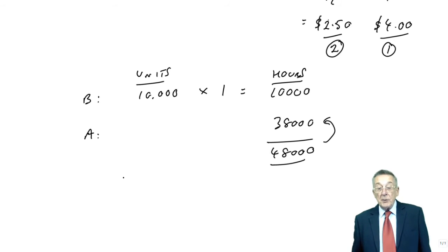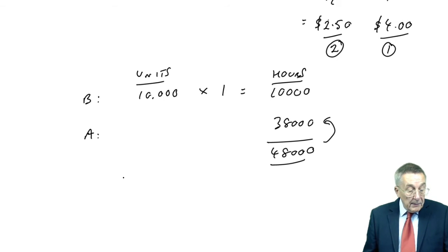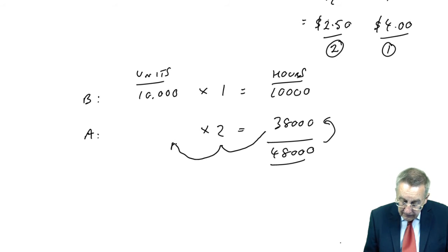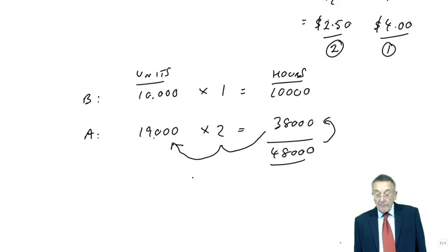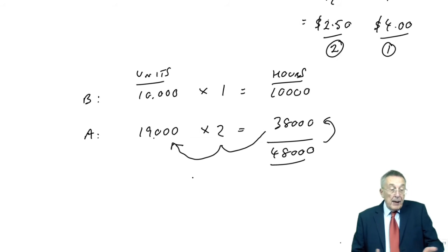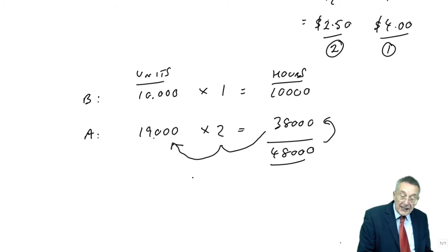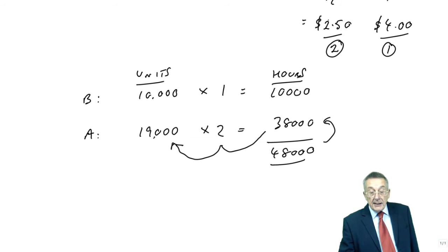We can't make any more Bs because of the limit on demand. We'll therefore use it to make the next best, which is A. And how many can we make? Each A takes two hours. And so, 38,000, we can make 19,000 A's. Again, with more products, maybe we could make the full 20,000 A's, and have some hours left. We'd go to the next best and so on. Don't waste time in the exam if all they ask is the optimum production plan, we've now finished. 19 A's, 10 B's.